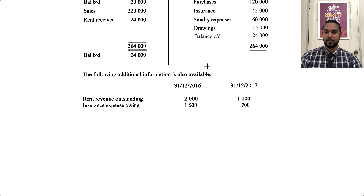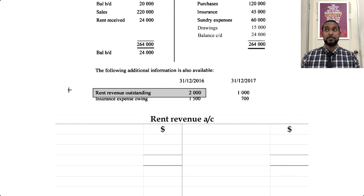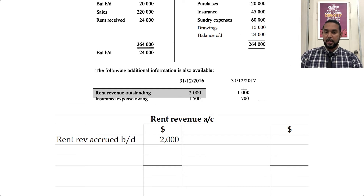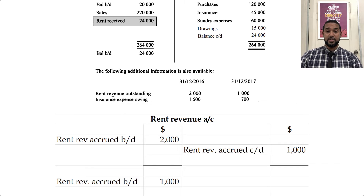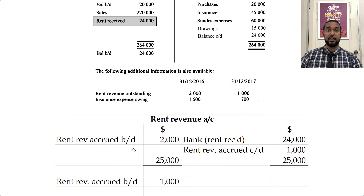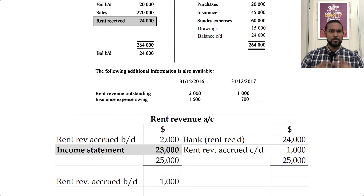Let's start with the rent revenue account. Rent revenue outstanding is an asset — outstanding means you haven't received it, which means you are owed that rent revenue, and any revenue owing to you is an asset. Assets have balances brought down on the debit side. At the end of the period we also have rent revenue outstanding, which again will be brought down on the debit side, but will first have to be carried down from the credit side from the previous period. The other thing we have with regard to rent revenue is rent received in the bank account of 24,000 — which means if it's on the debit side there, it's going to be on the credit side here. So our totals have to match. The balancing figure is the income statement figure — the amount of rent revenue earned. If you need a refresh on how to do revenue accounts, I'm going to put a card up there and the link in the description below.